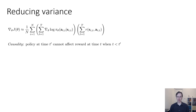Causality says that the policy at time t-prime can't affect the reward at another time step t if t is less than t-prime. This is another way of saying that what you do now is not going to change the reward that you got in the past. It's important to note that this is not the same as the Markov property. The Markov property says that the state in the future is independent of the state in the past given the present, and it is sometimes true, sometimes not true, depending on your particular temporal process. Causality is always true — rewards in the past are independent of decisions in the present.